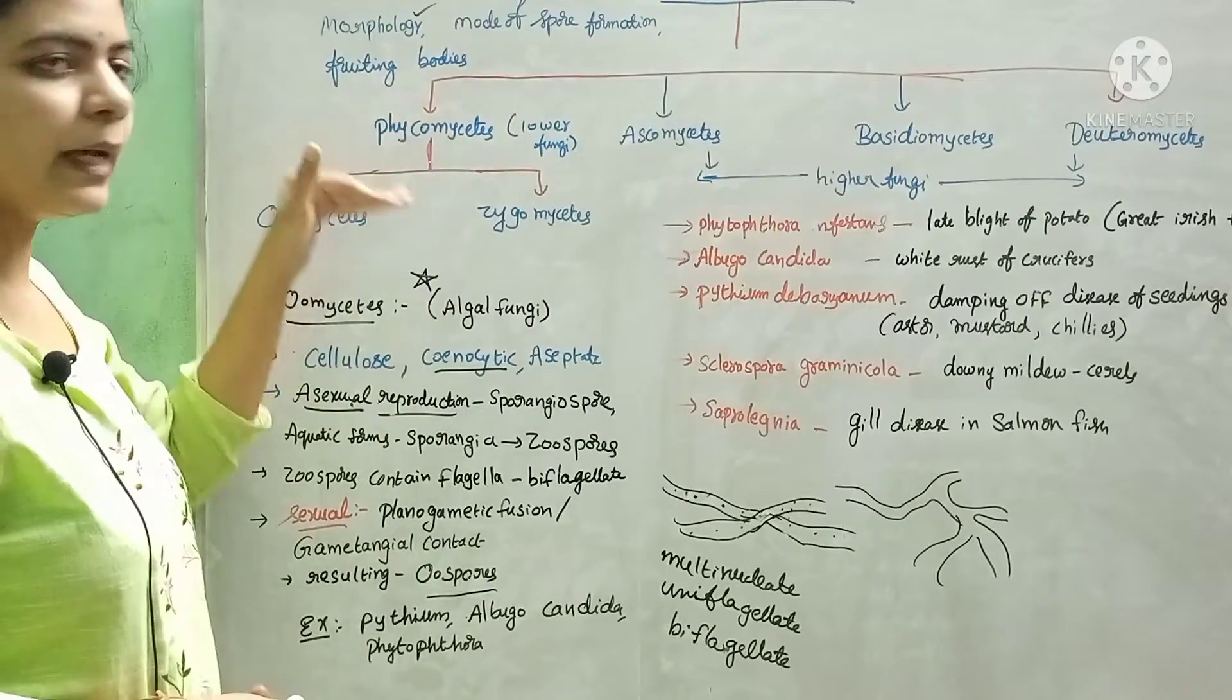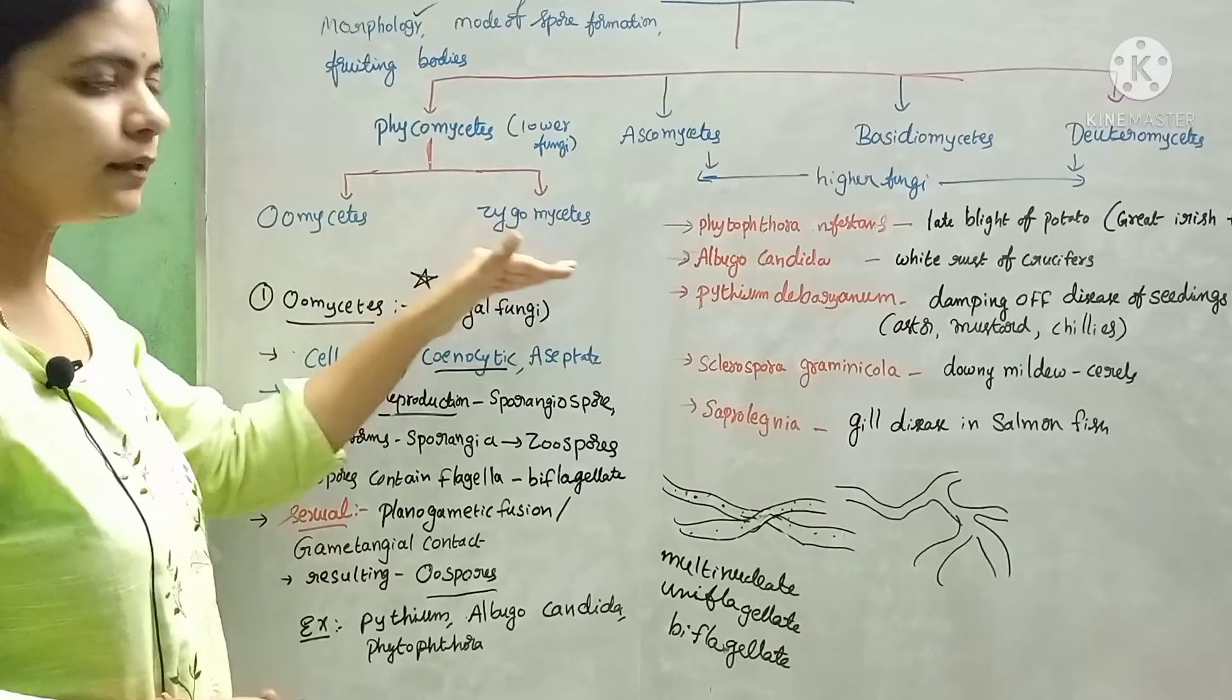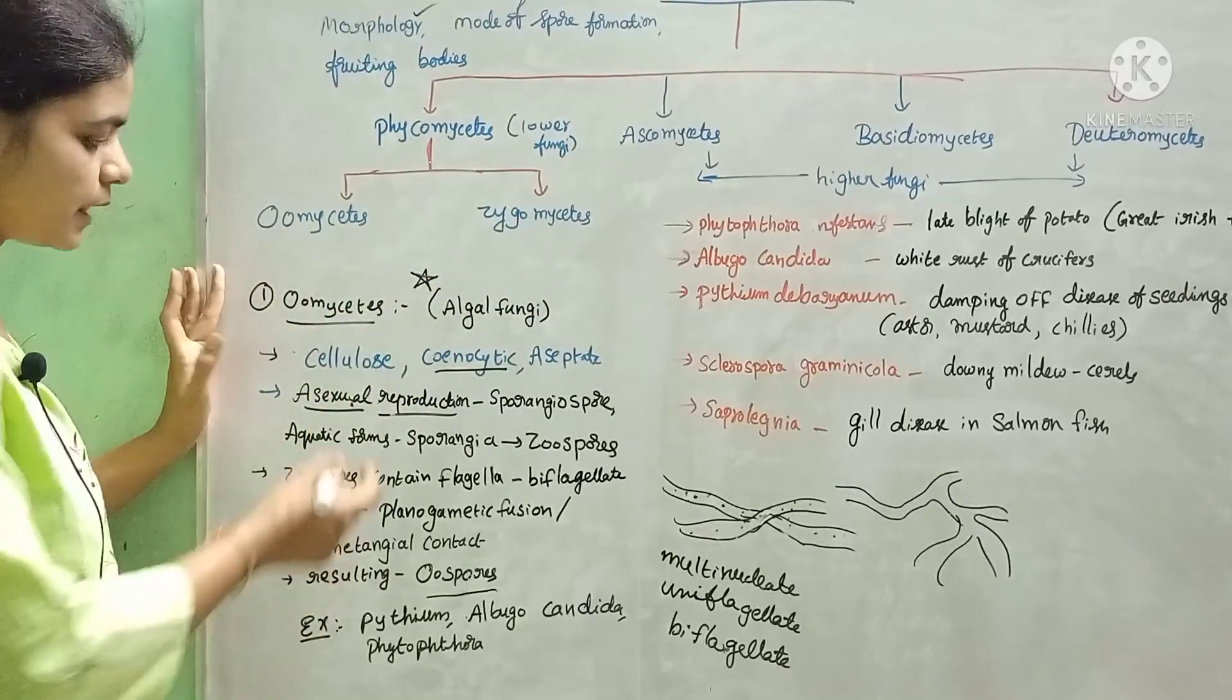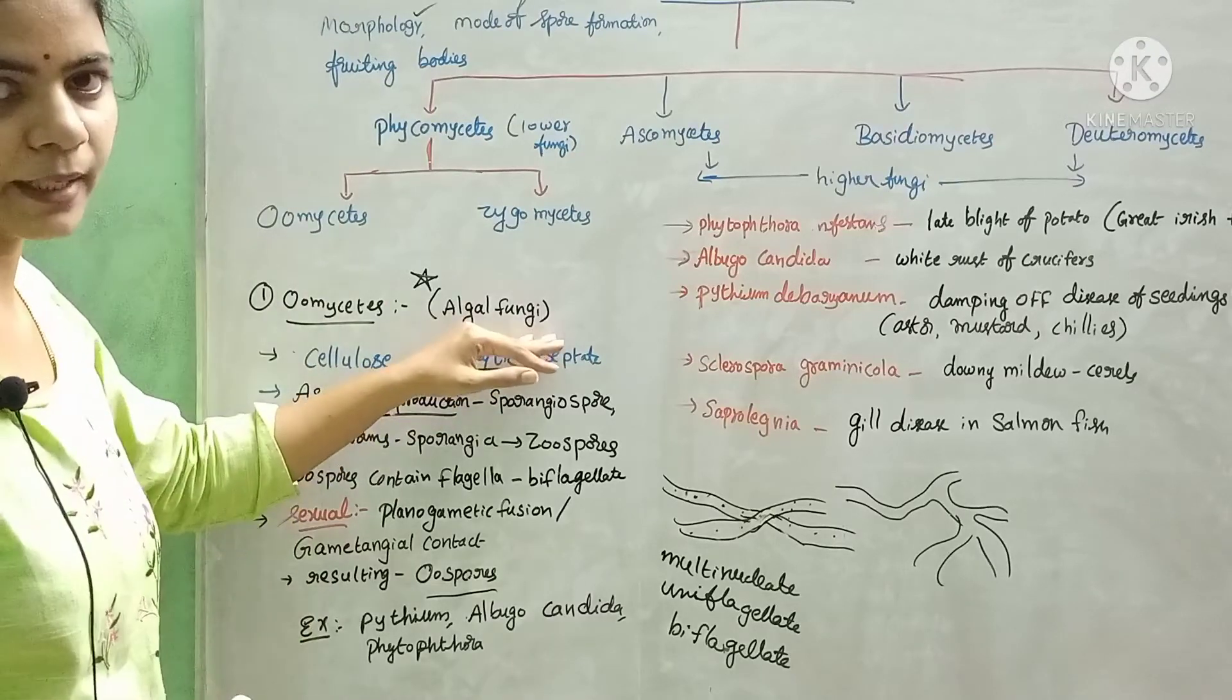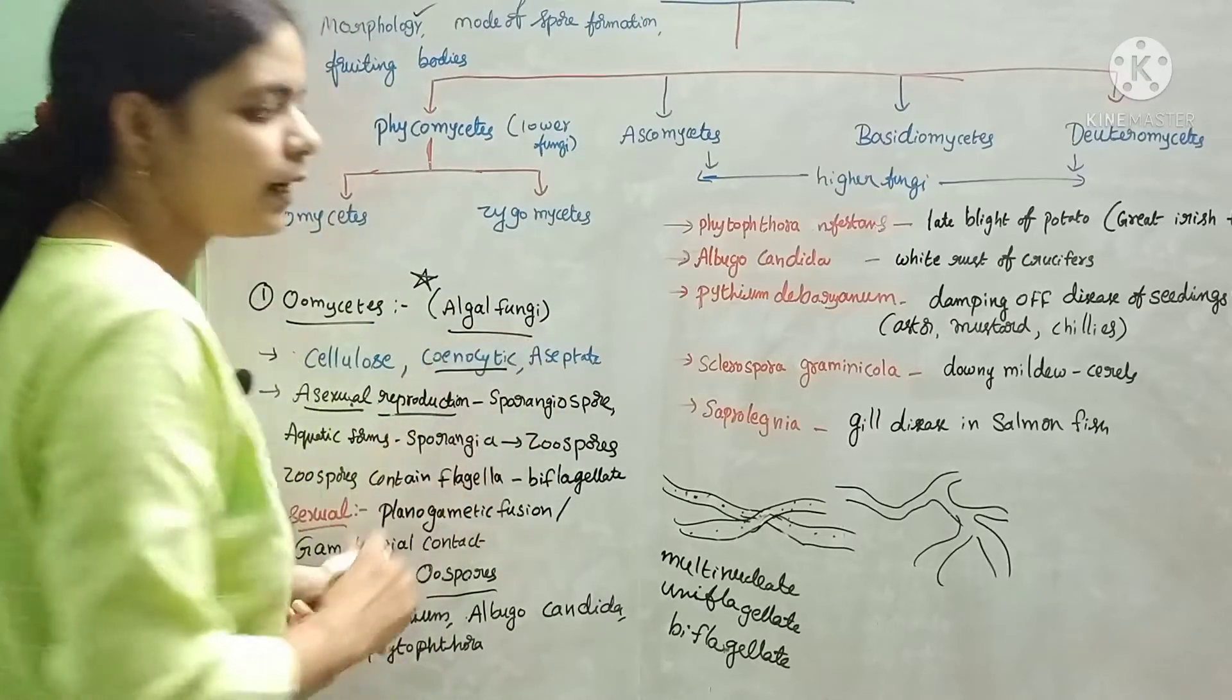Phycomycetes are classified into two groups: oomycetes and zygomycetes. Oomycetes are commonly called algal fungi.